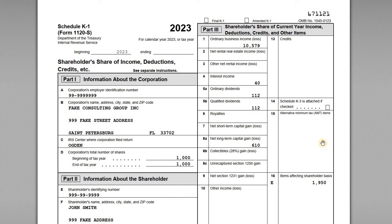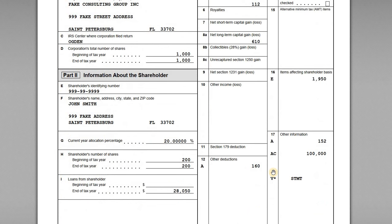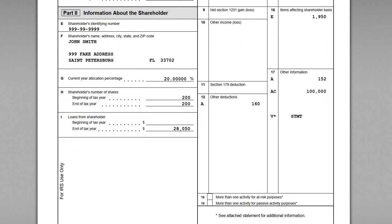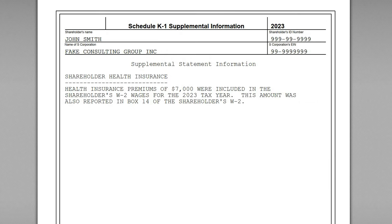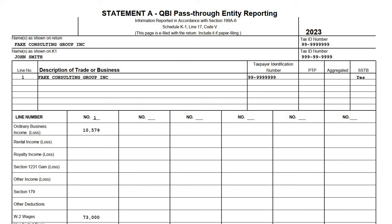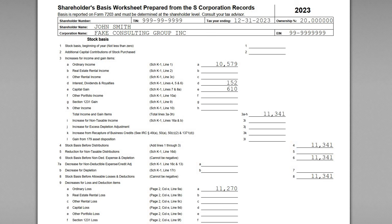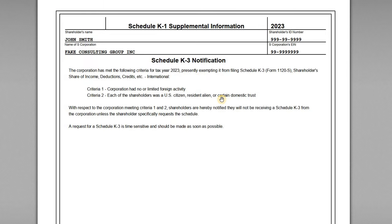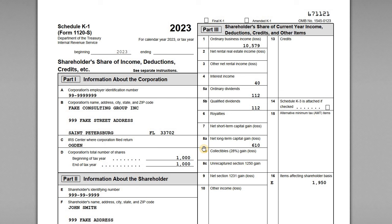The K-1 includes page one, which has a number of items filled in and others left blank. We also have some supplemental information included with the K-1 package: a loan statement on shareholder loans to the S Corporation, the QBI information from Section 199A, a basis worksheet for John Smith, and the K-3 notification which lets the shareholder know we are not going to be receiving a Schedule K-3.